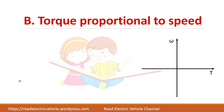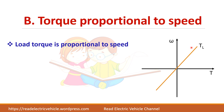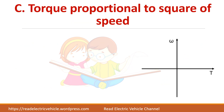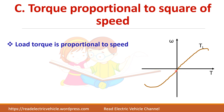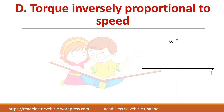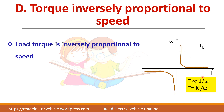The second type is torque proportional to speed: T = k·ω. This is available in eddy current brakes. The third type is torque proportional to the square of speed: T ∝ ω². This curve is found in fans, pumps, and compressors.